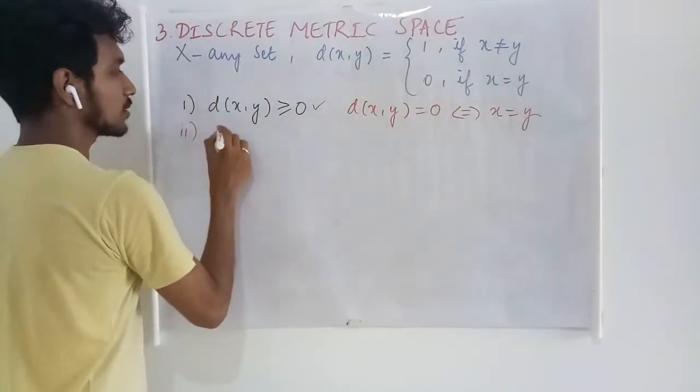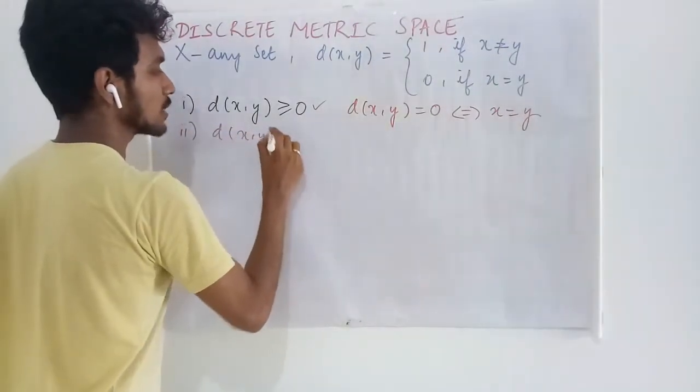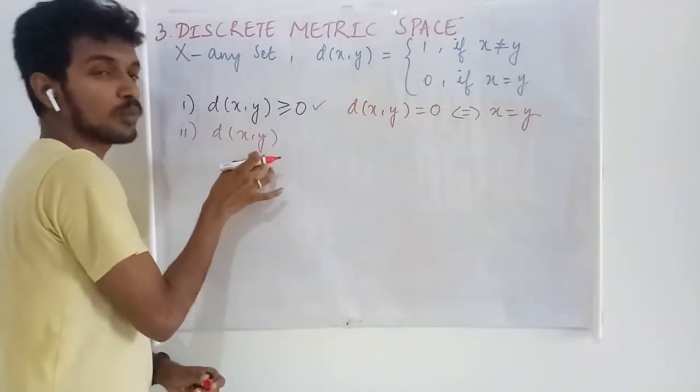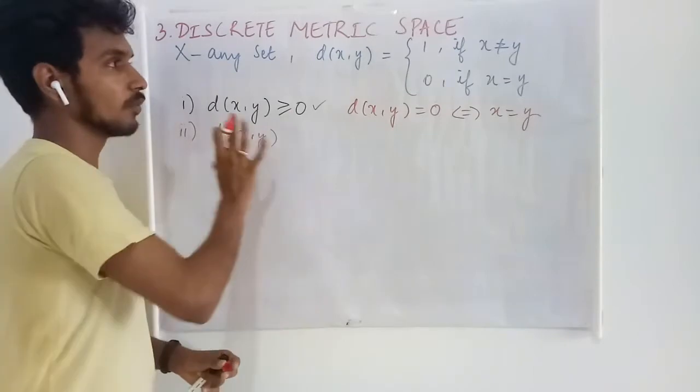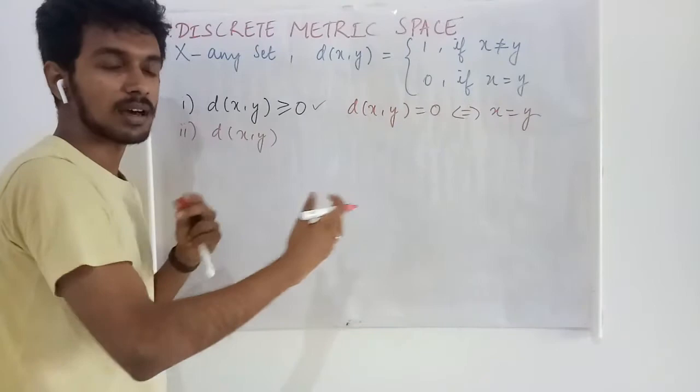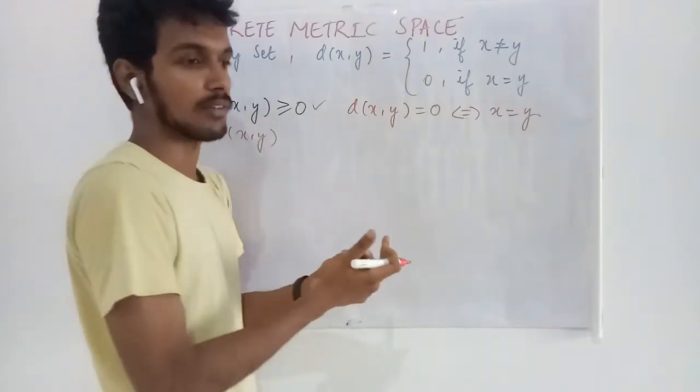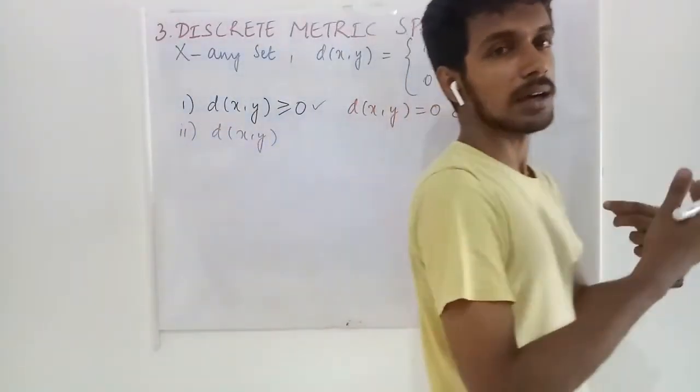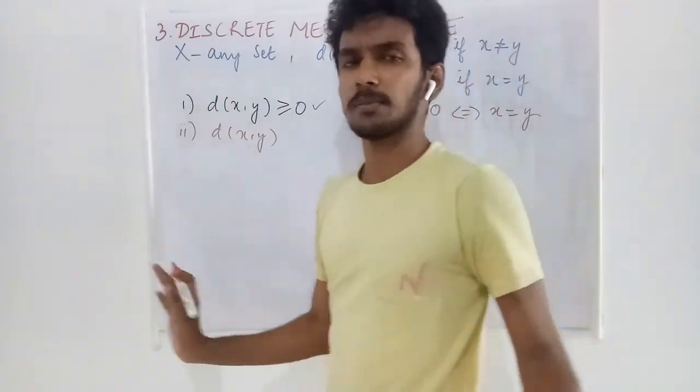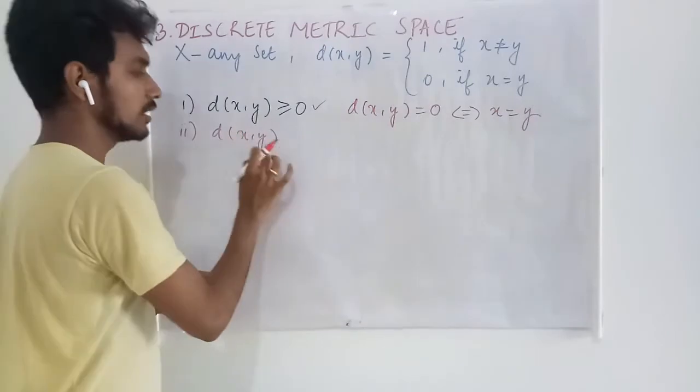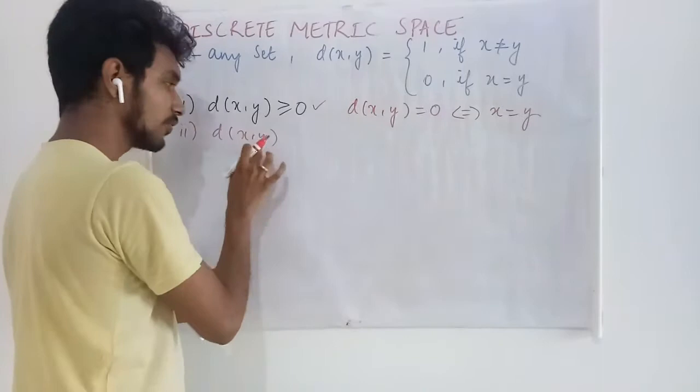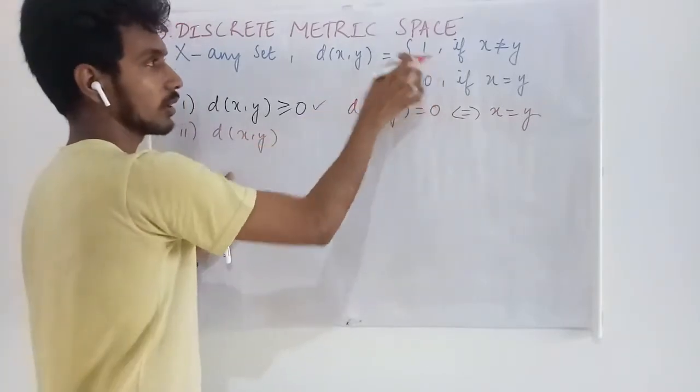What is the second condition? d(x,y) must be the same as d(y,x). If x and y are different, we don't need to worry whether this X has any order relation or what kind of elements it has—whether it has numbers, or it is a finite set or an infinite set. We don't need to bother about anything. If these two are different, we will get 1. If these two are same, we will get 0.